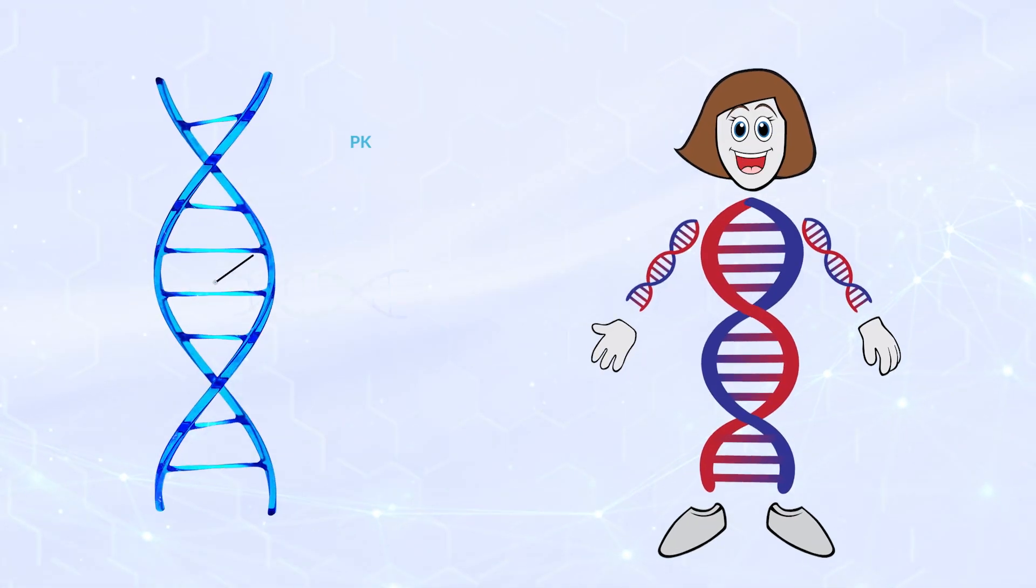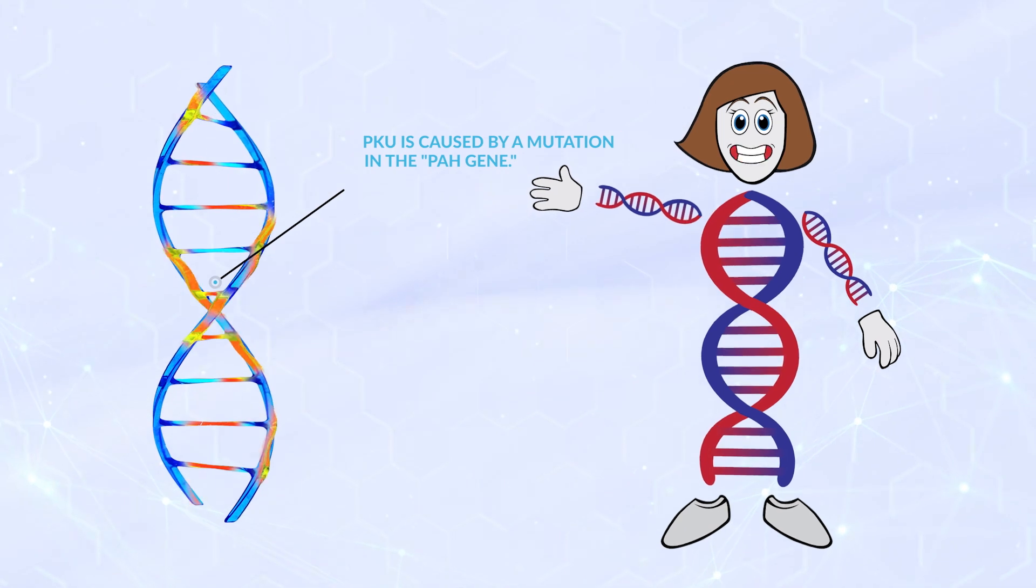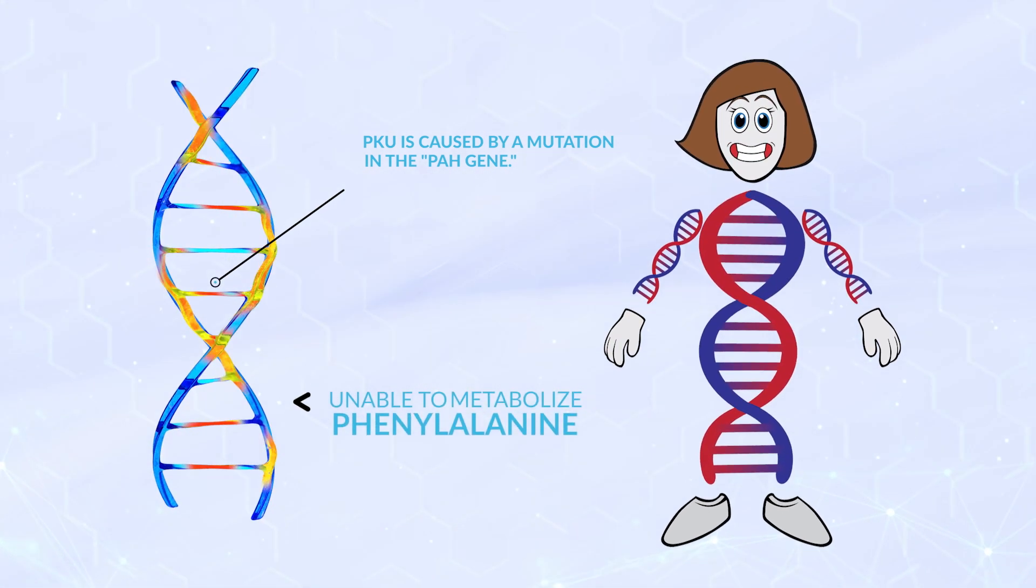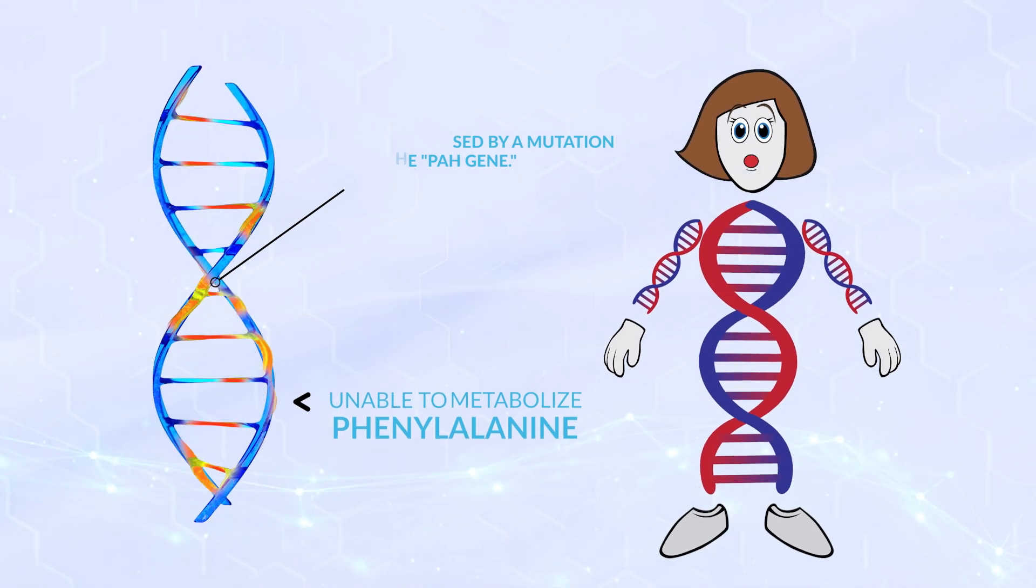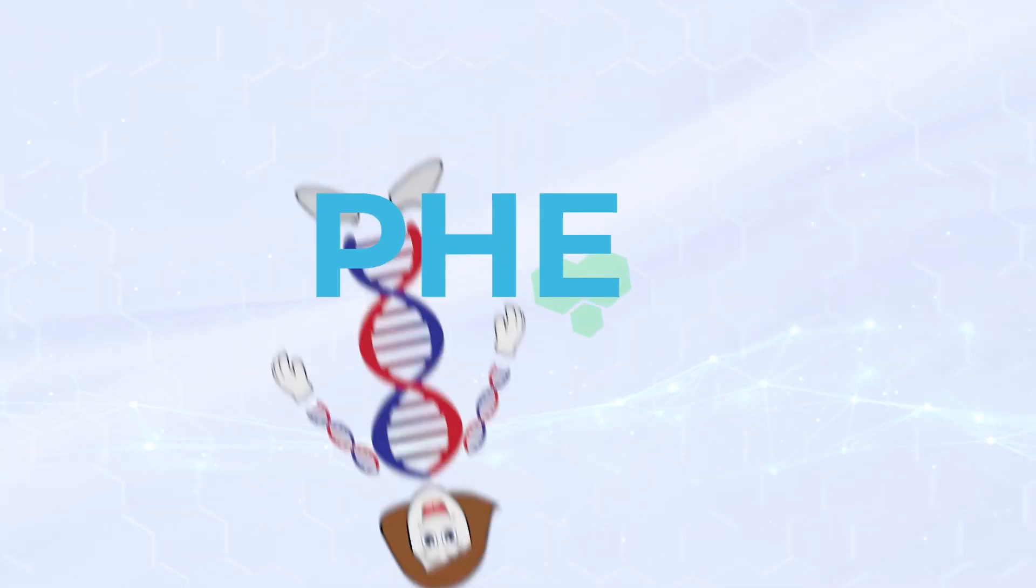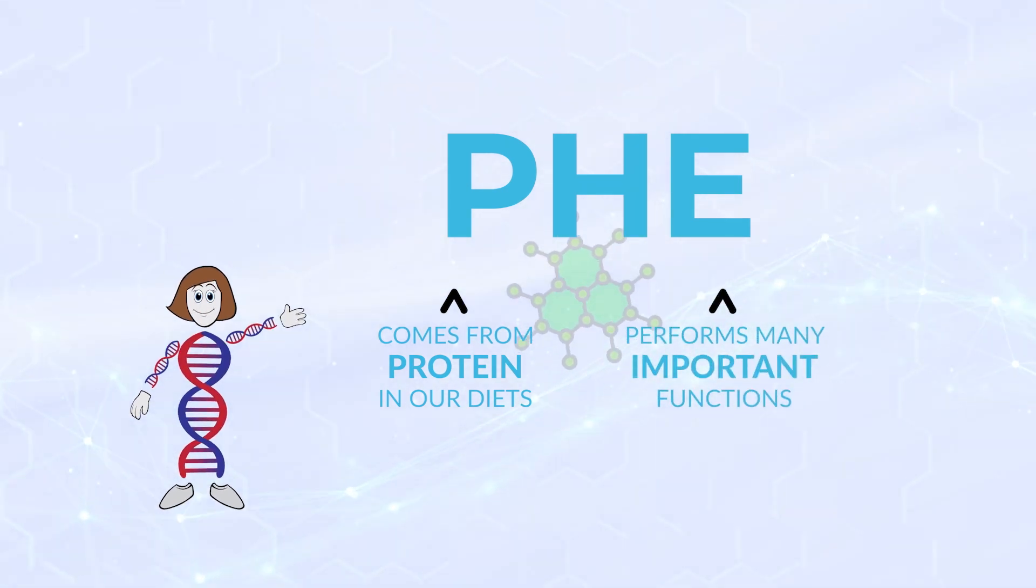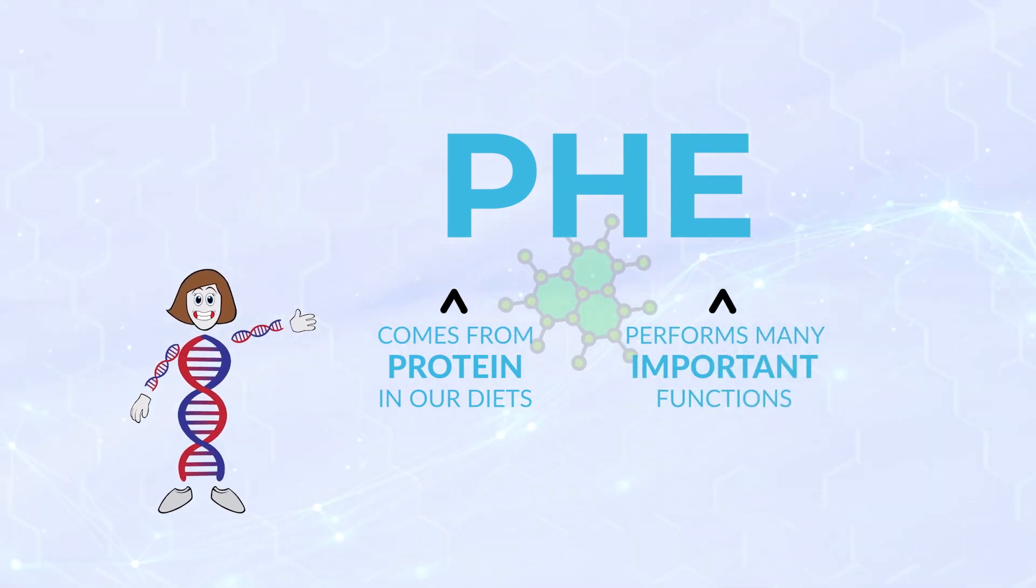PKU is caused by a mutation in the PAH gene. Because of this mutation, people with PKU cannot metabolize the amino acid phenylalanine, or as we call it, Phe. Phe comes from protein in our diet and has many important jobs, including helping our brain function normally.